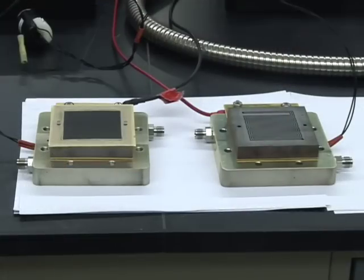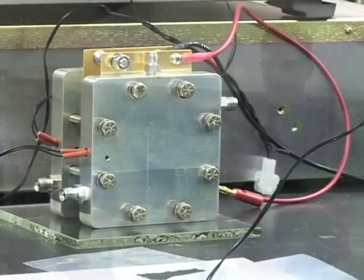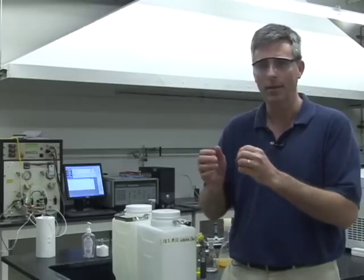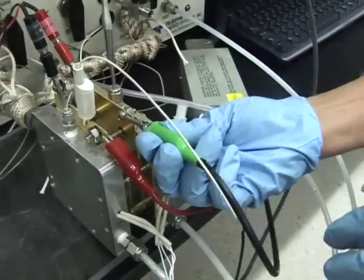A fuel cell is a device that takes stored chemical energy and converts it into electrical energy directly. It takes the chemical energy that is stored within whatever fuel you have. It could be hydrogen, it could be methane, it could be gasoline. And then through two electrochemical reactions it converts that directly into electricity.